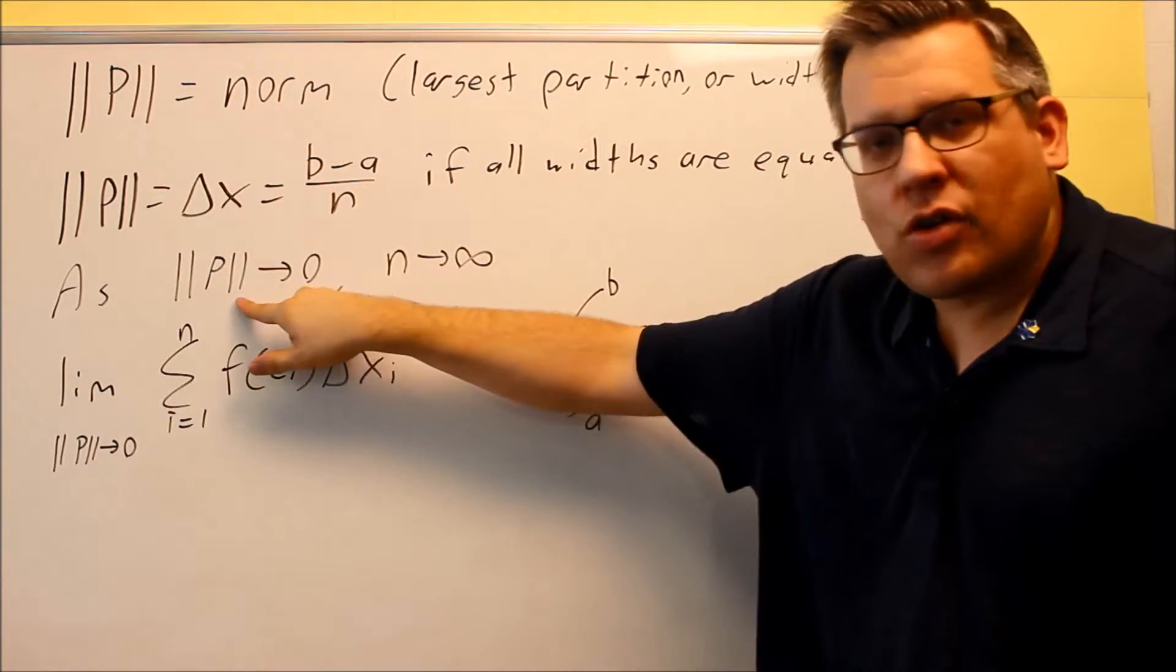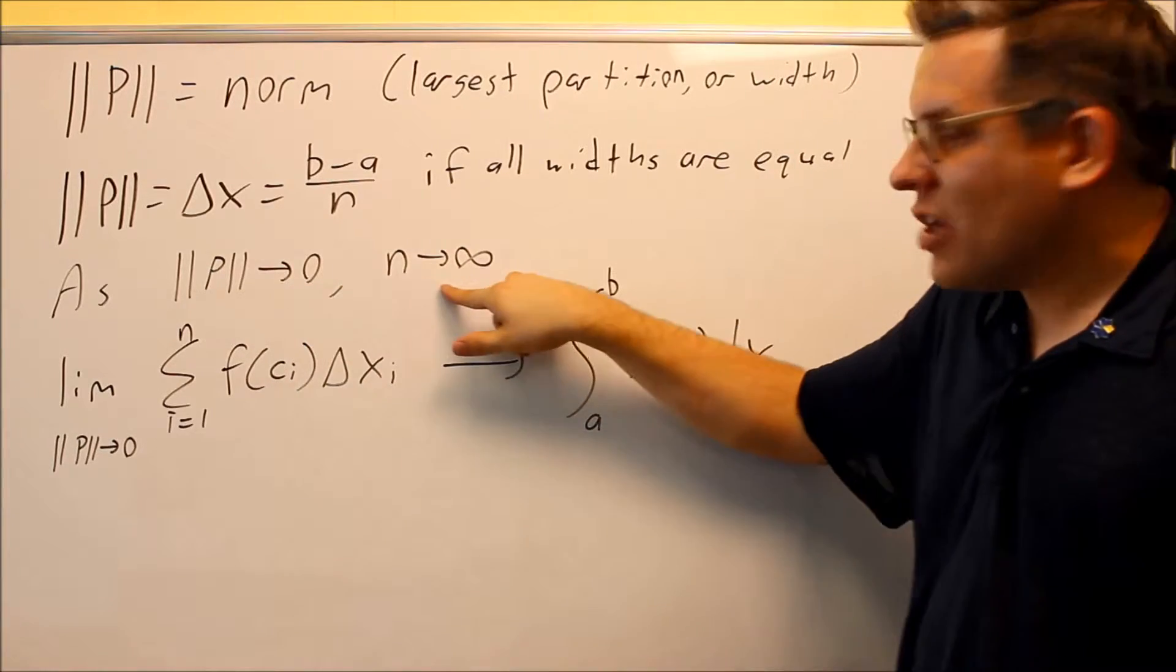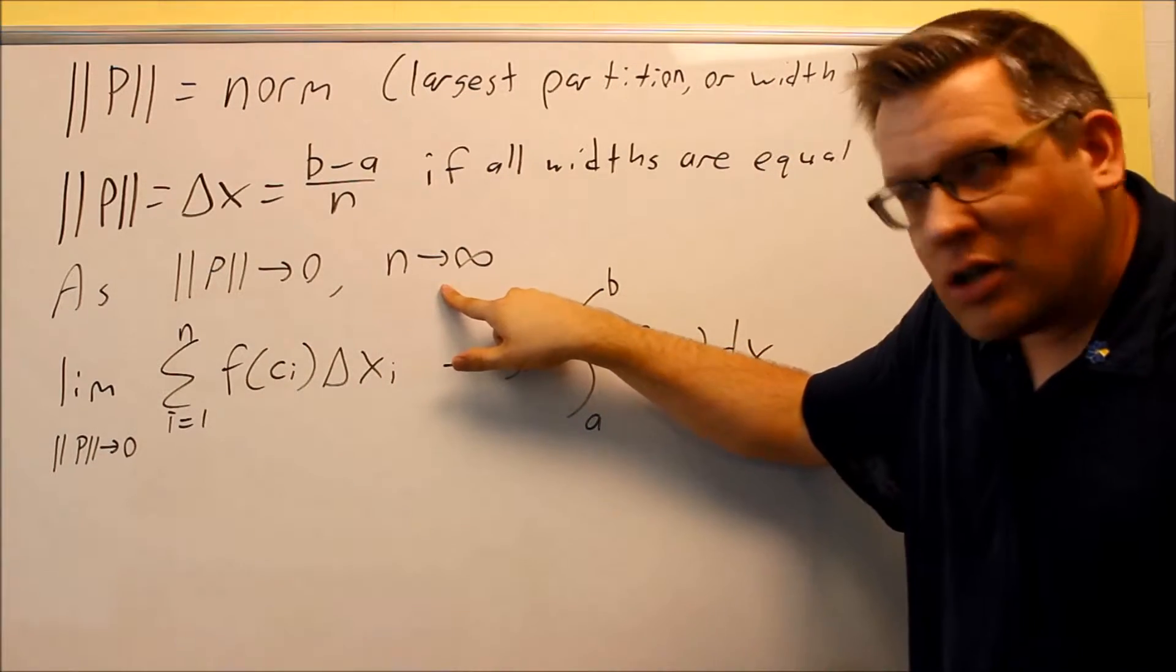Therefore we can say this: as the norm goes to zero, or as the delta x goes to zero, that means that the number of rectangles I have is going to go to infinity.